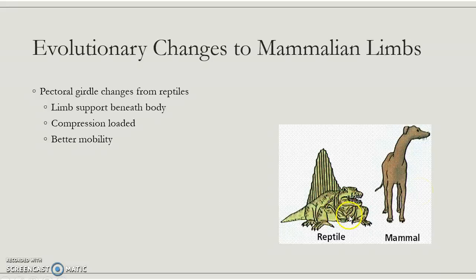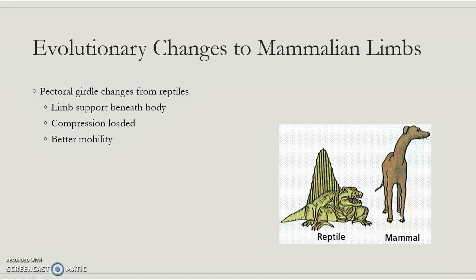We see here that we have massive changes to the pectoral girdle — that's in your breast area — and so that's changes in how the upper limb is attached to the thorax. With these reptiles, you see that the upper limbs sort of extend outside of the body to the side. With mammals, it's more below in the case of this mammal. So you have some major changes to the scapula, to the clavicle, where the upper limb is attaching, and that gives us better mobility. You can imagine how this reptile would move versus how a mammal moves — we move very differently. We don't have to slither and rotate back and forth to get those upper limbs moving. We have more compression-loaded upper limbs and just better mobility in general.